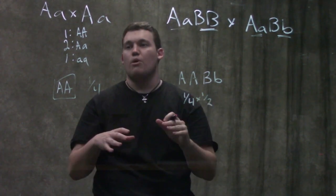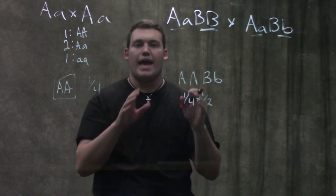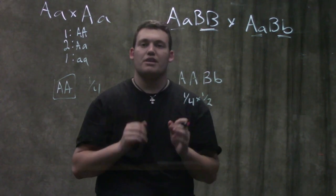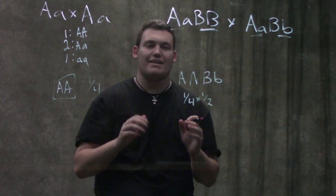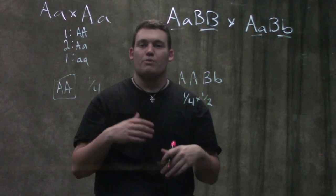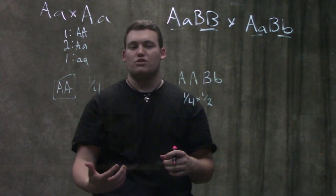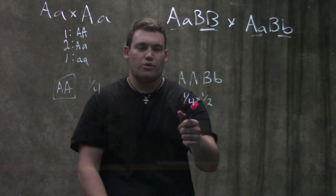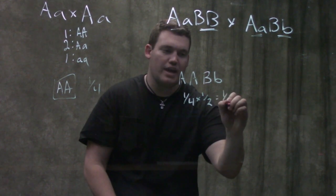And then because I want both, I want big A big A and big B little b. Do you guys hear the key word there? I said and we want big A big A and big B little b. What do we do when we hear the word and? We use the multiplication rule. So we want one quarter times one half equals one eighth.